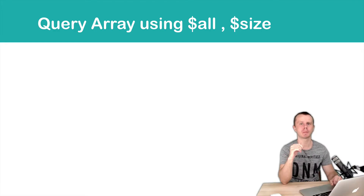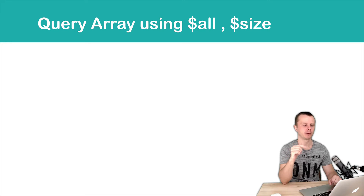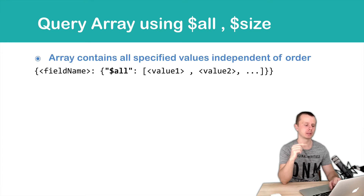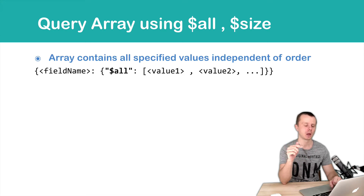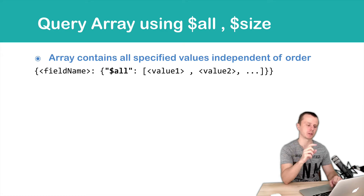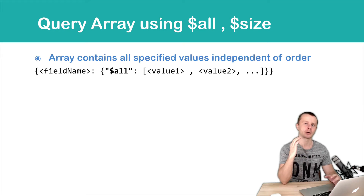Let's talk about two operators that are used to query arrays. The first operator is $all, and this operator requires a list of values. It will look for arrays that have all those values specified in the list. Arrays may also have more values than you specify here.